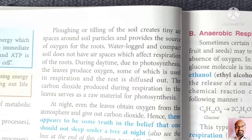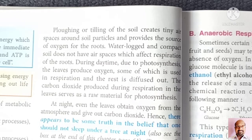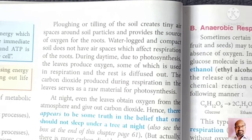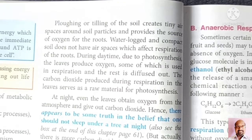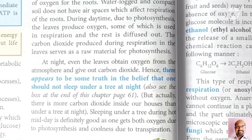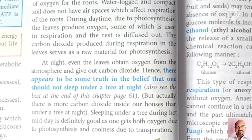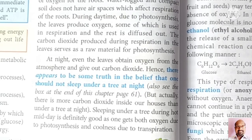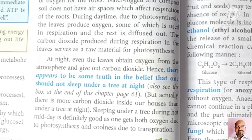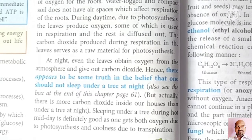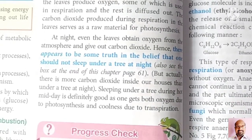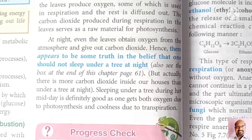The carbon dioxide produced during respiration in the leaves serves as raw material for the process of photosynthesis. During the daytime, photosynthesis in the leaves produces oxygen. Some of this oxygen is utilized for the process of respiration, and the rest is diffused out, which is inhaled by animals and other living organisms. It is advisable that at night one should not sleep under trees, because at night plants take in oxygen from the atmosphere and give out carbon dioxide.